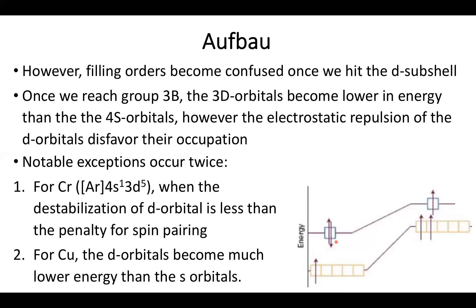It turns out that despite how often people talk about these systems, what actually causes the 4s¹ 3d⁵ structure isn't the fact that we want a complete subshell — it's just a quirk and accident that the d orbital energies lower enough at that point that d becomes more stable than s. It actually has nothing to do with wanting a complete subshell. So this brings us to the major ideas of electronic filling. Next time, we'll be talking about how these filling principles are reflected in periodic trends. Until then, take care.